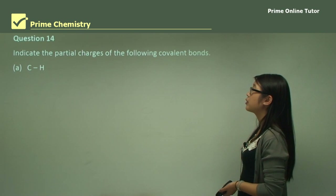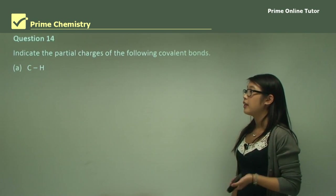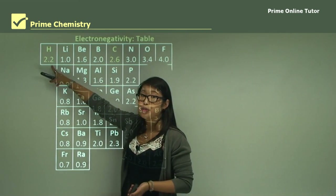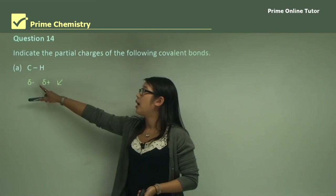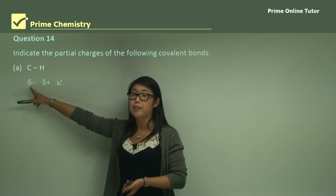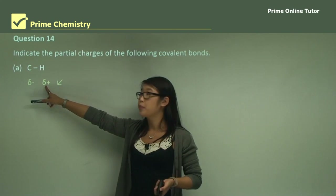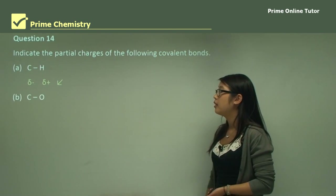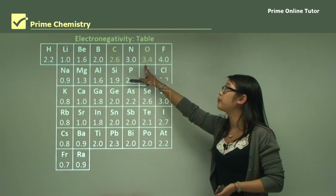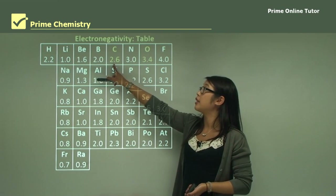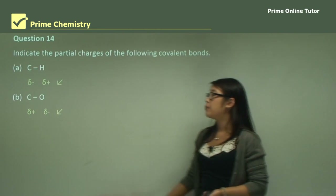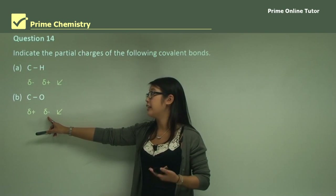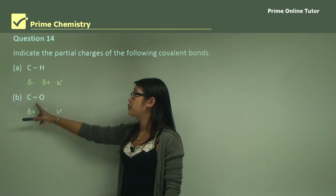Question 14: indicate the partial charges of the following covalent bonds. For carbon and hydrogen: carbon has an electronegativity value of 2.6 and hydrogen has 2.2, so carbon has a higher electronegativity and will be slightly negative, pulling the electrons closer, while hydrogen has a slight positive charge. For carbon and oxygen: oxygen has a value of 3.4 and is more electronegative than carbon at 2.6, so oxygen pulls the shared pair of electrons closer, giving it a partial negative charge, while carbon has a slight positive charge.